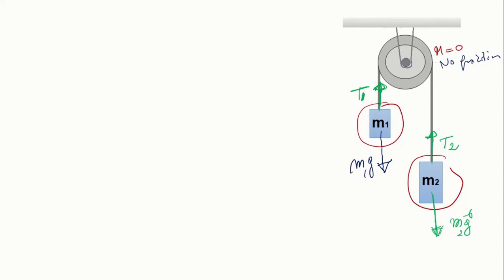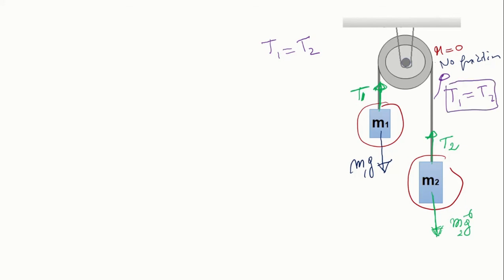Now I know all the forces applied on each object. Remember, when we say the pulley is massless and there is no friction, by definition T1 in magnitude equals T2. This you need to remember. T1 equals T2 because of this condition — the pulley is massless and there is no friction, so automatically the tension in the rope is the same all the way.